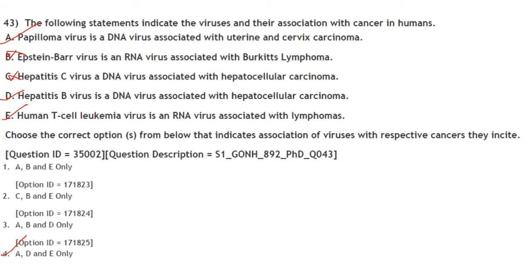Match viruses with their cancer associations: Papillomavirus is a DNA virus associated with uterine/cervical carcinoma — correct. Epstein-Barr virus is a DNA virus (not RNA) — so B is wrong. Hepatitis C virus is an RNA virus (not DNA) — so C is wrong. Hepatitis B virus is a DNA virus associated with hepatocellular carcinoma — correct. Human T-cell leukemia virus is an RNA virus associated with lymphomas — correct. Answer: A, D and E only.